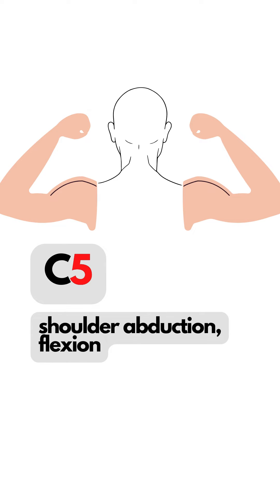C5 is shoulder abduction and flexion, with the deltoid as the key muscle. Look at how the forearm and arm are perpendicular to each other like the top half of number 5, while the bulge of the deltoids forms the rounded bottom of 5.